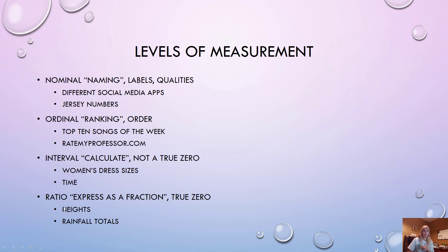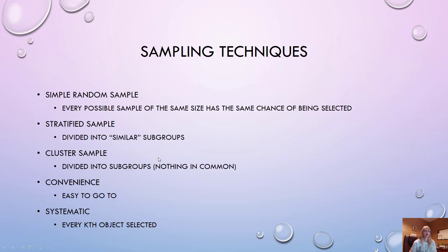Interval and ratio are often confused. Both are quantitative and used for calculations. The key difference with interval is there's no true zero — meaning zero doesn't mean non-existent. Like women's dress size zero: the dress still exists. A true zero means the thing is non-existent — like zero rainfall means there was actually no rain.